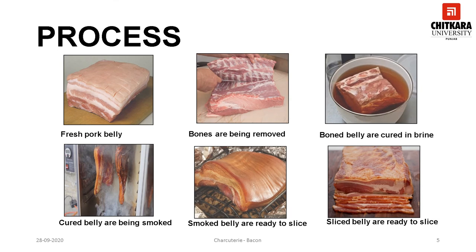This slide explains the steps involved in the processing of bacon. First, the pork belly is separated from the carcass and it is deboned. Now the meat is ready to be cured. It can be cured using a wet curing mix or a dry curing mix. Once the pork belly is cured it has to be rinsed thoroughly with cold water to remove any excess salt.